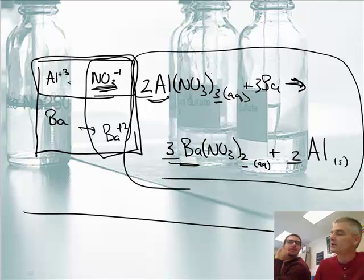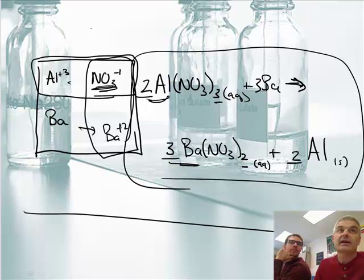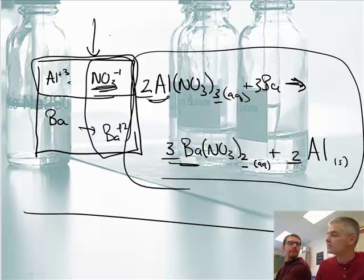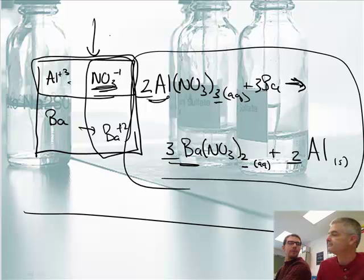That's how you do single replacement reactions. You're going to do lots of these. The key thing, guys, is start with the box, check who's the good-looking guy on the activity series, and once you've got that done, make the reaction.